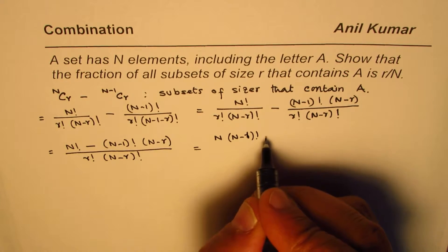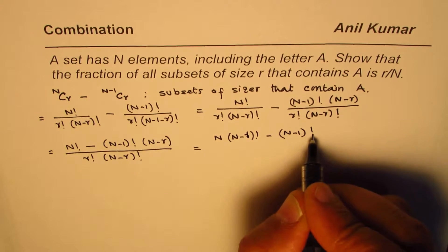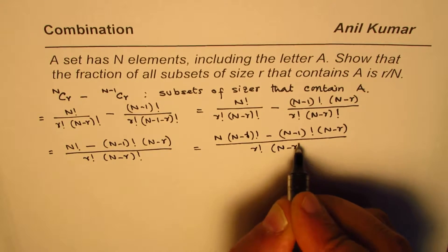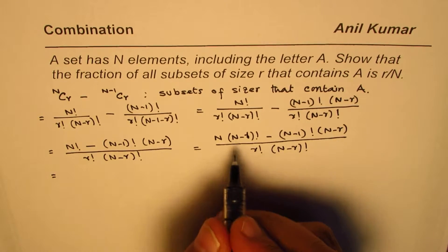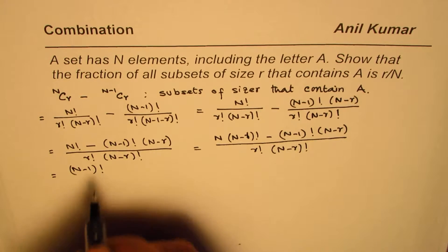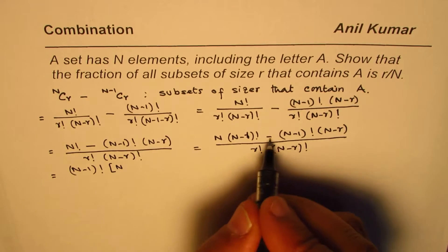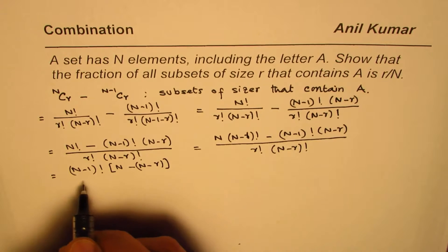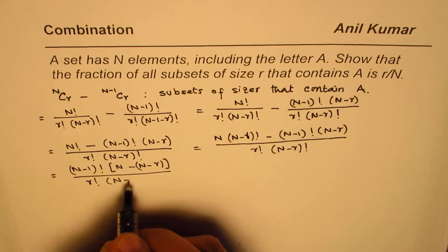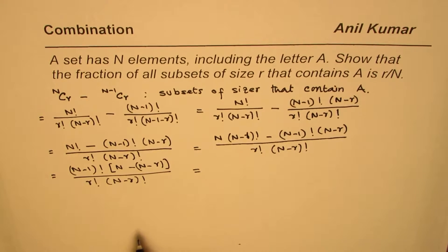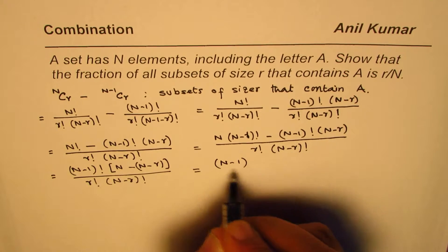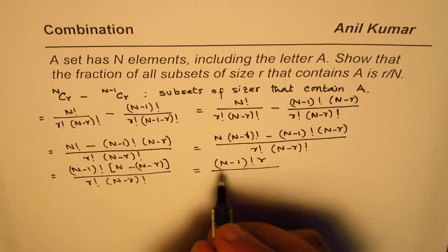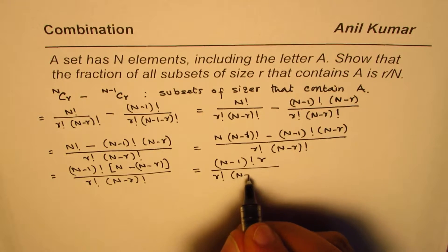So we have N times (N-1) factorial minus (N-1) factorial times (N minus R) factorial, with denominator R factorial. We can take (N-1) factorial as a common factor, giving us (N-1) factorial times the bracket N minus (N minus R), which simplifies to (N-1) factorial times R, all divided by R factorial times (N minus R) factorial.